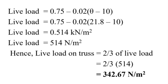For the truss, only 2/3 of the live load is active. Therefore, the live load on the truss = 2/3 × 514 = 342.67 N per m².